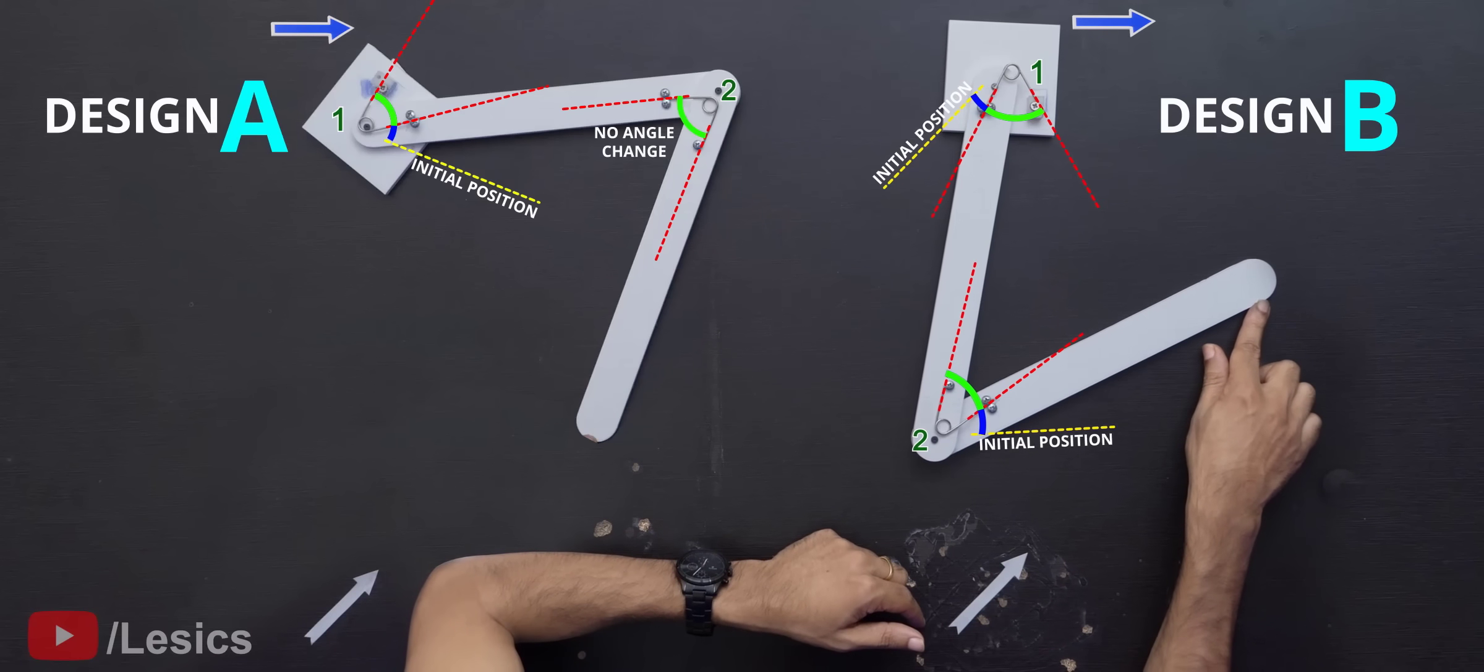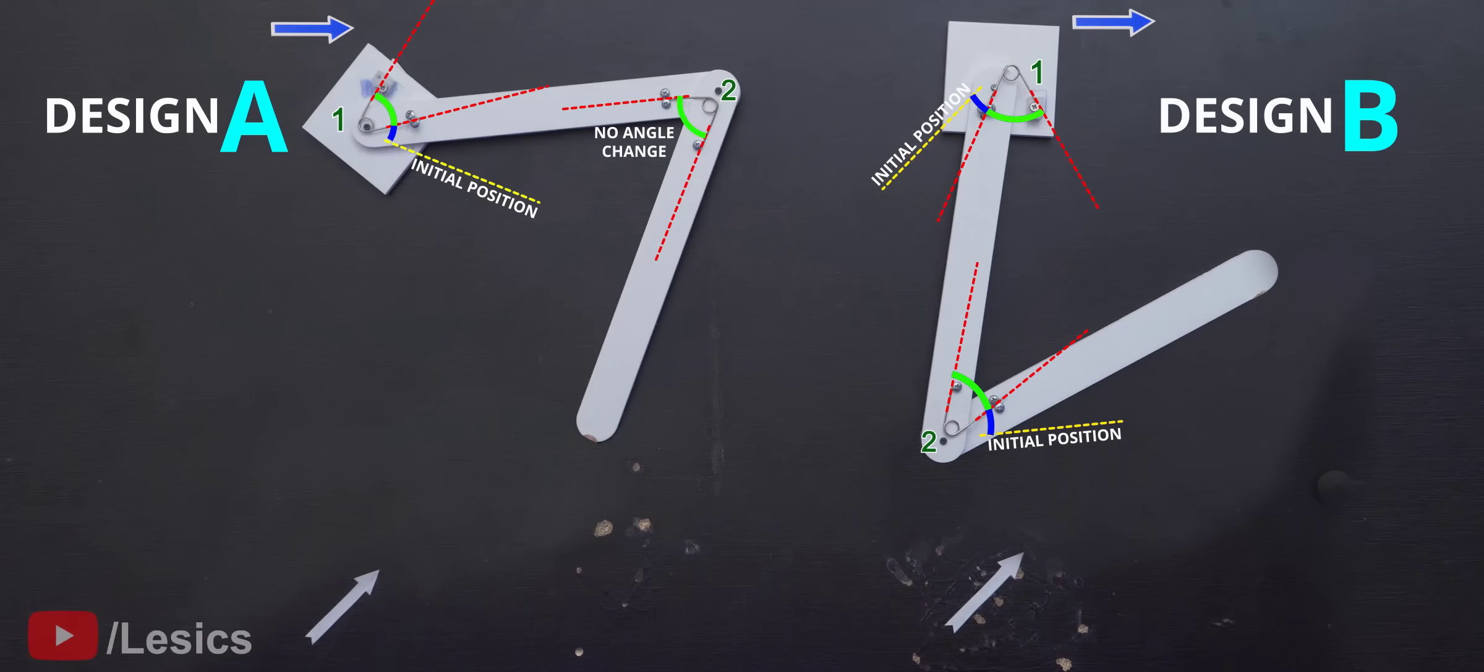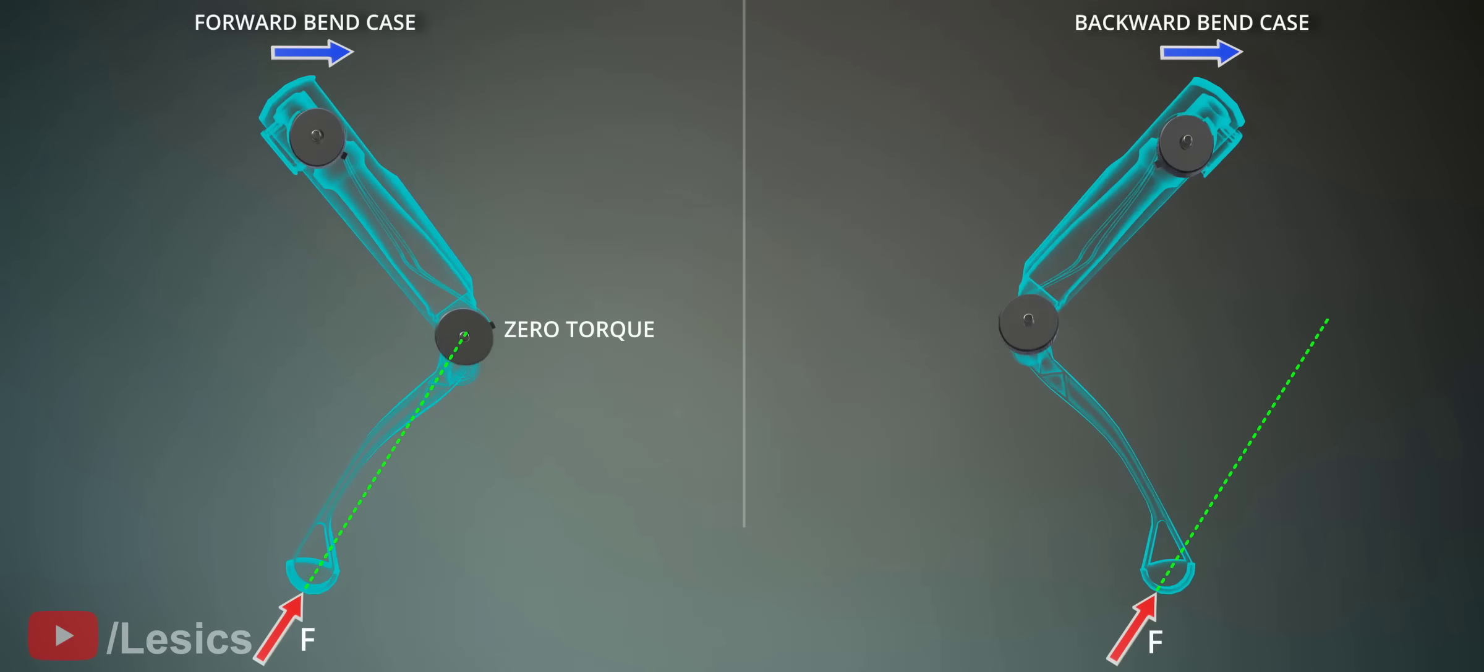This shows that in the backward-bend design, both the motors will play an equal role. This is exactly why the Boston Dynamics engineers selected the backward-bend design for the spot robot. You can easily find the reason behind it with this torque analysis.